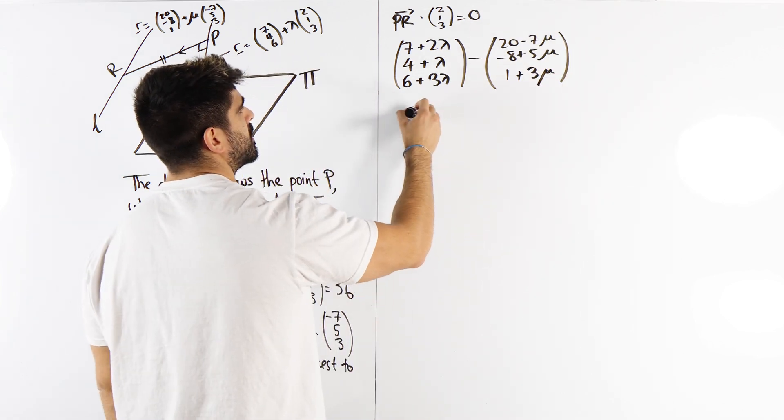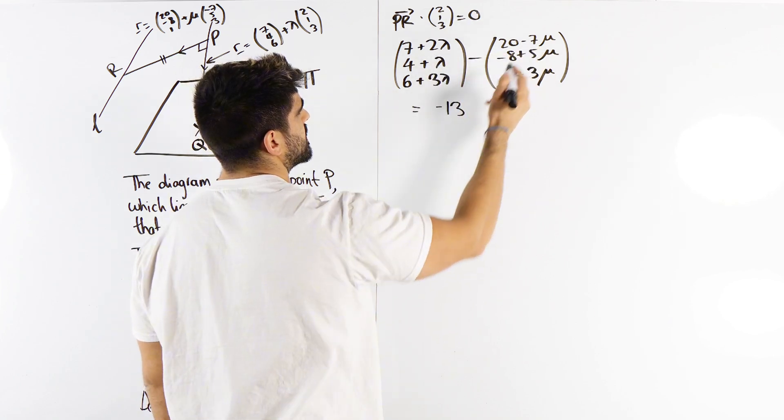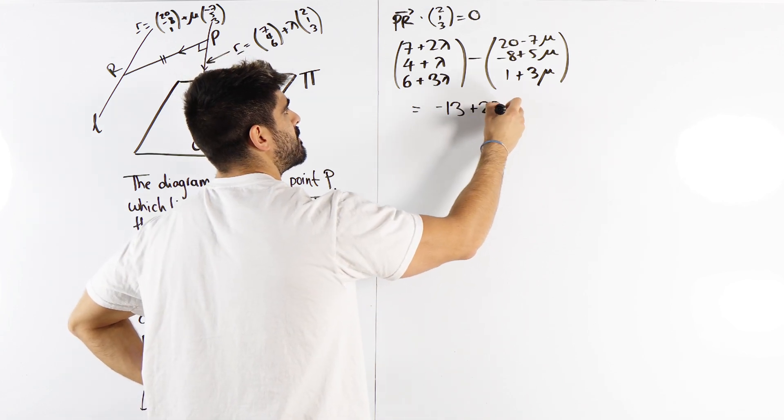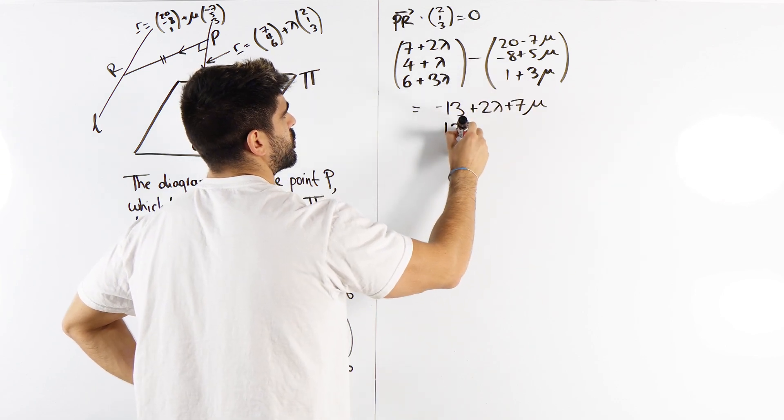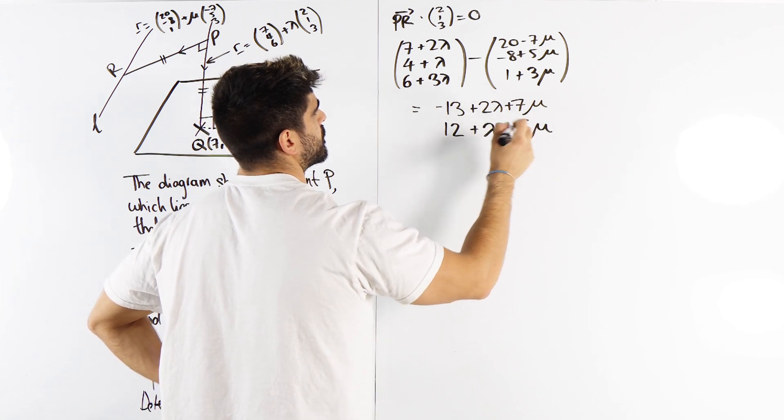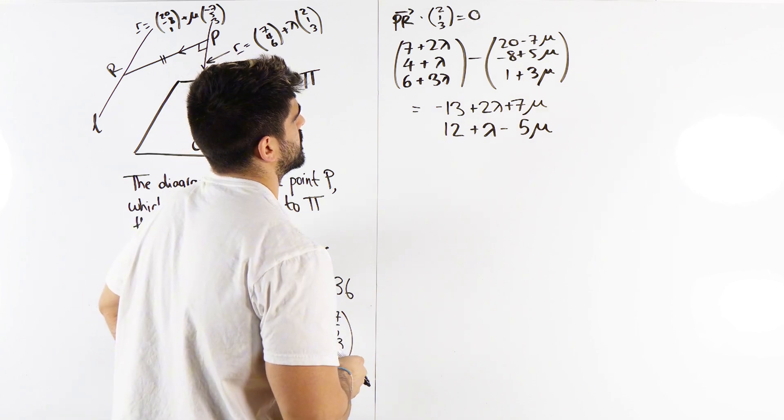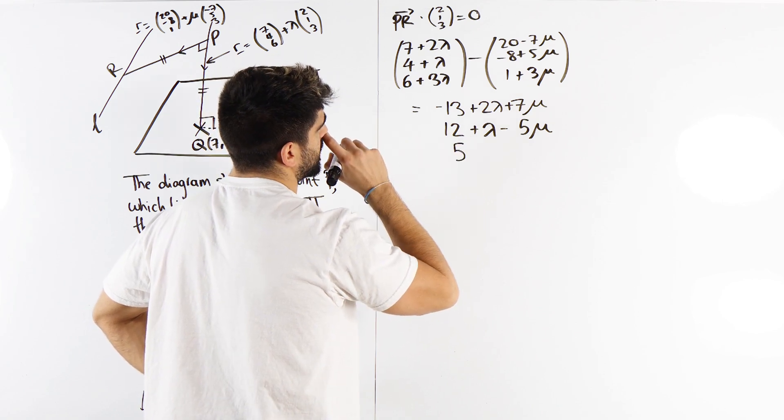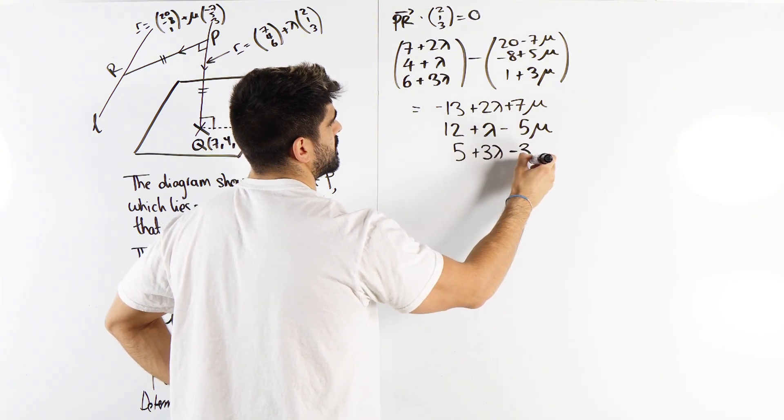So what have we got? 7 minus 20 is minus 13. 2 lambda plus 7 mu. 4 minus minus 8 is 12 plus lambda minus 5 mu. And then 6 minus 1 is 5, then we have plus 3 lambda minus 3 mu.